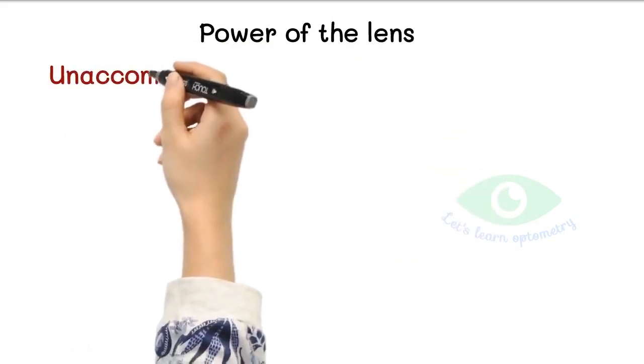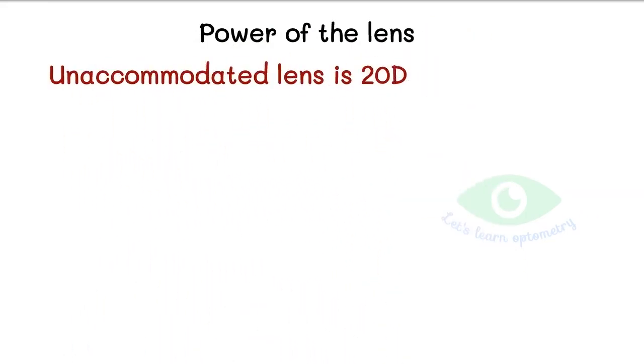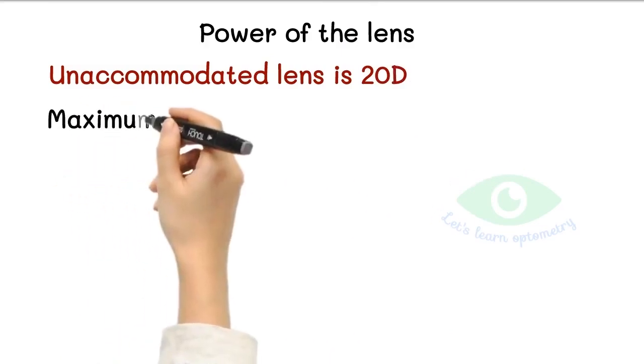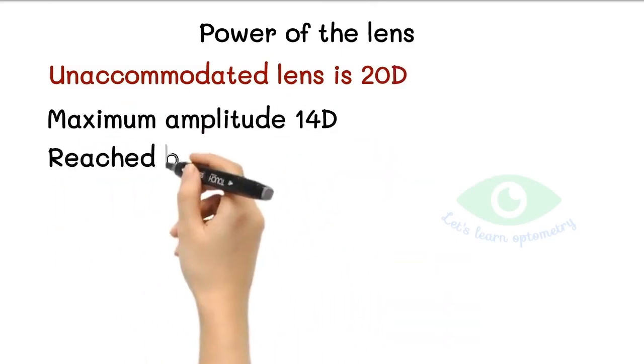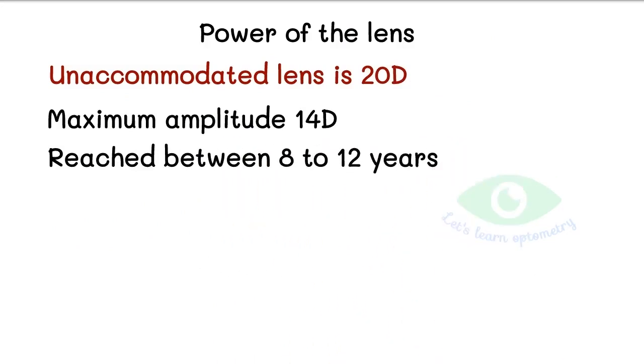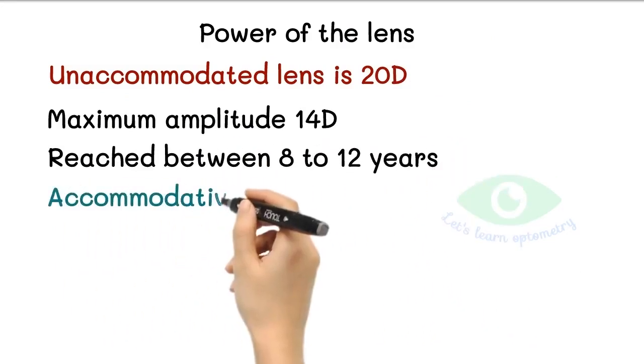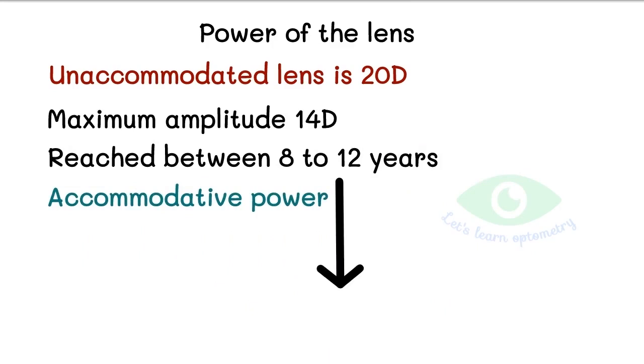The refractive power of the unaccommodated lens is approximately 20 diopters. The power of the lens increases in accommodation, with the maximum accommodative amplitude of 14 diopters reached between 8 to 12 years of age. Accommodative power decreases with age approaching zero after 50 years of age.